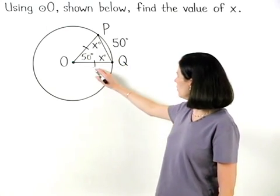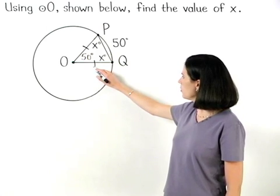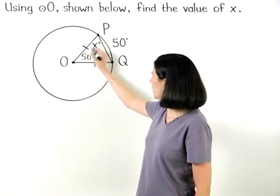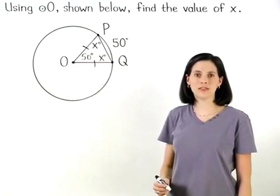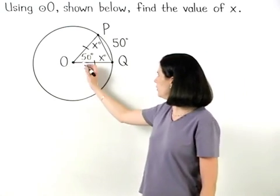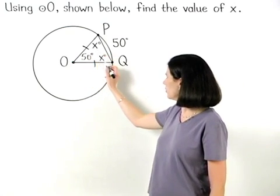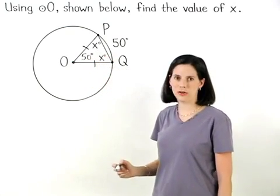To find the value of x, remember that the sum of the measures of the angles of a triangle is 180 degrees. We can set up the equation 50 + x + x = 180.